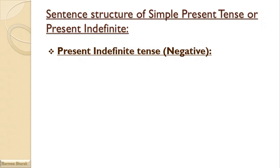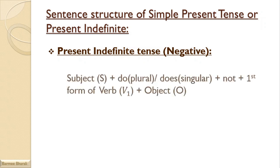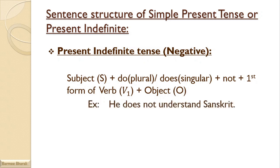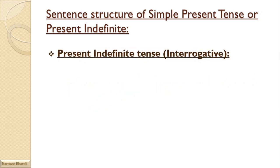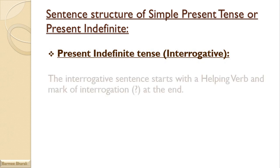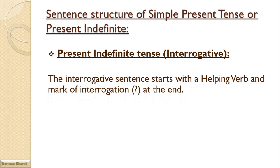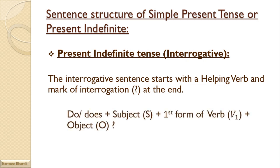For present indefinite tense negative, the structure is: Subject + do/does + not + first form of verb + object — 'do' with plural and 'does' with singular. For example, 'He does not understand Sanskrit.' For the interrogative, the sentence starts with a helping verb and ends with a mark of interrogation: Do/Does + subject + first form of verb + object. For example, 'Do you sing?' or 'Does he teach you?'